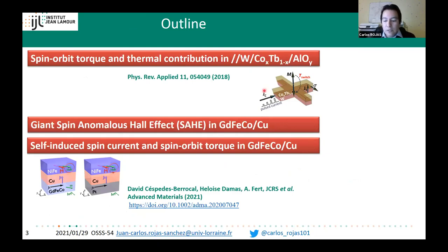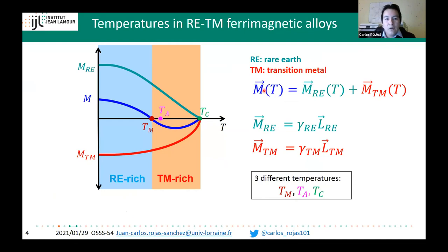Let's remember the characteristic temperatures in ferrimagnetic rare earth–transition metal alloys. We have two magnetic sub-lattices whose temperature dependences differ. As a consequence, there are three characteristic temperatures: first, when the net magnetization vanishes—the magnetic compensation temperature; another slightly higher, when the angular momentum vanishes—the angular compensation temperature; and the Curie temperature, when the sample becomes paramagnetic.